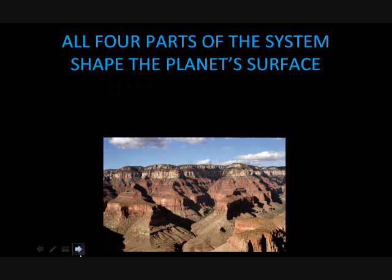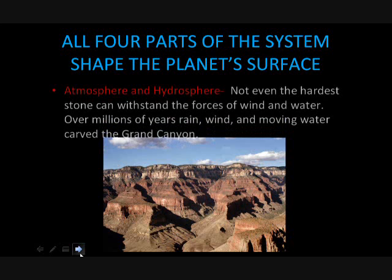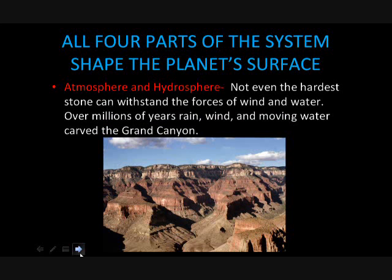All four parts of the system shape the planet's surface. The atmosphere and hydrosphere are powerful forces — not even the hardest stone can withstand the forces of wind and water over millions of years. Rain, wind, and moving water carved the Grand Canyon.